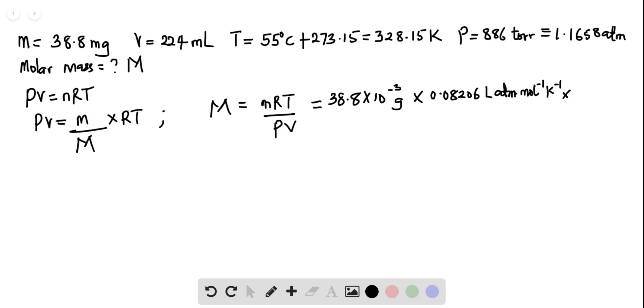multiplied by temperature, which is 328.15 Kelvin, divided by pressure, which is 1.1658 atmosphere, multiplied by volume, which in this case is in milliliters and we need to convert to liters, and that will be 224 times 10 raised to power minus 3 liters.